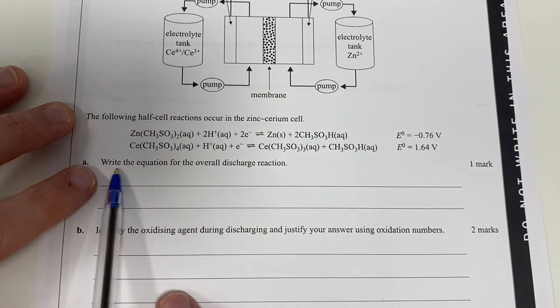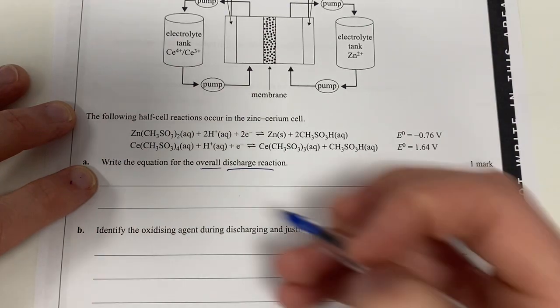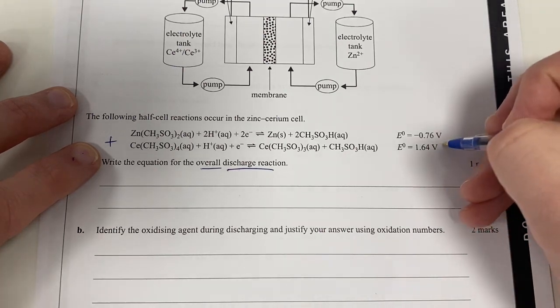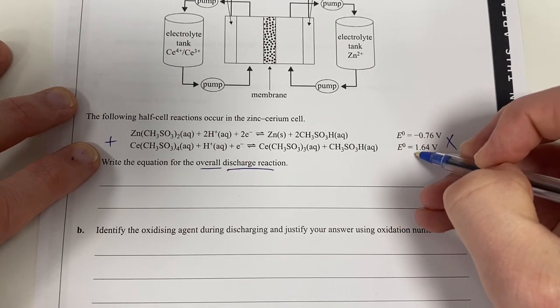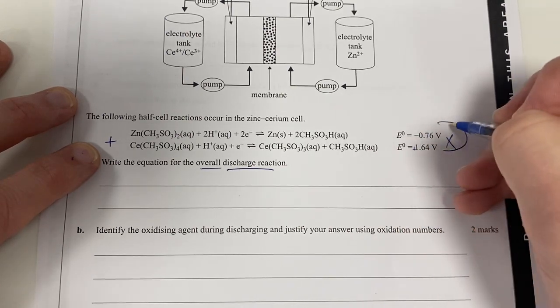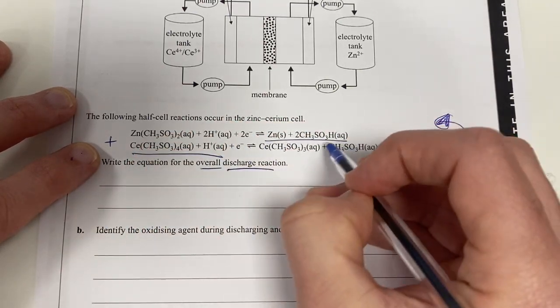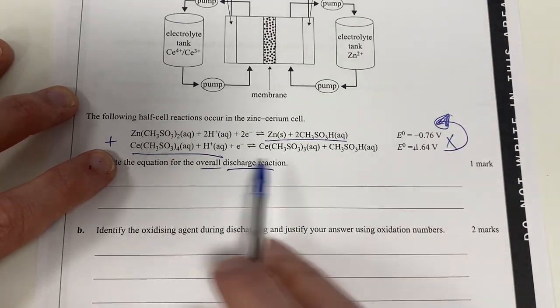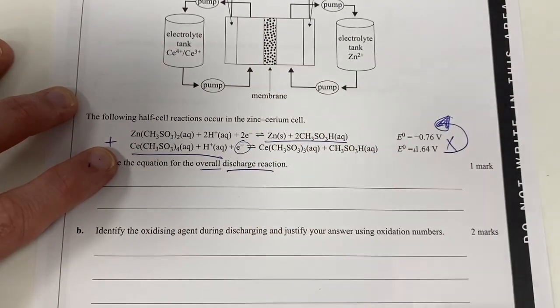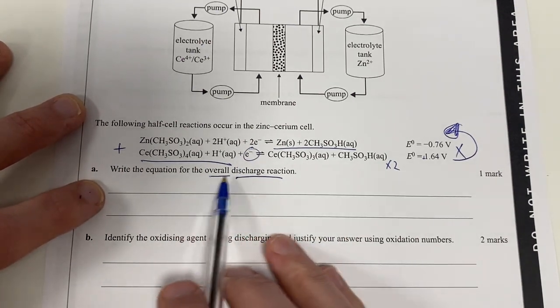Here are some equations. Write the equation for the overall discharge reaction. So overall discharge reaction means we need to add these together, provided we have them in the right order, and they are not. You can see here the E0 value of this is positive 1.64, so therefore it needs to be above this. We also need to multiply this guy by 2 because we need to make sure the electrons are the same.